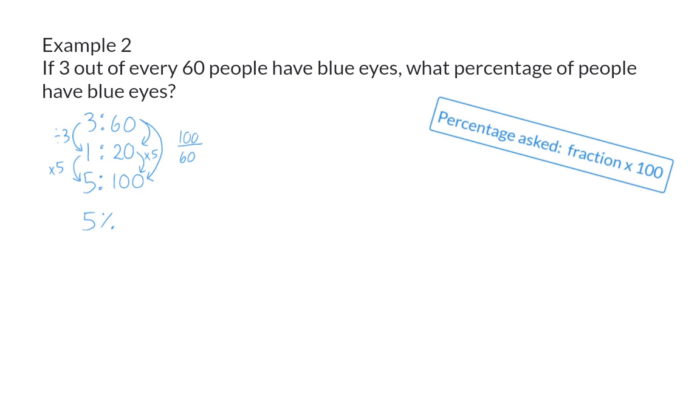Or, you can choose to use the conclusion we made in example 1, by taking the fraction given, which is 3 out of 60, and multiplying that by 100. Now, you can choose to either use your knowledge on fractions to determine this value, or you can use your calculator to also get 5%.